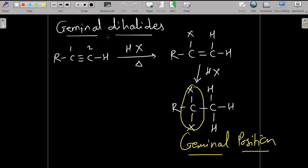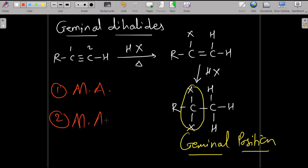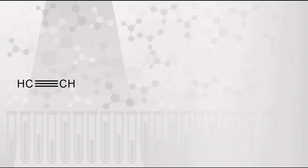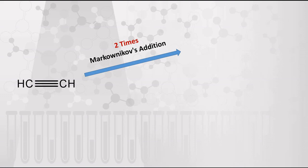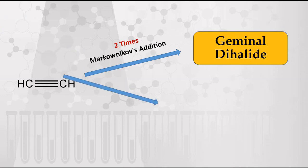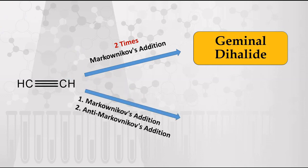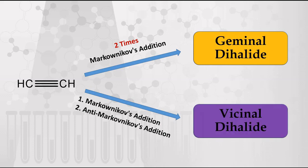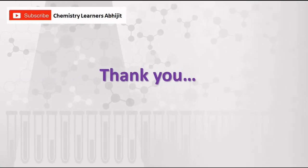The first reaction gave us geminal dihalide. To summarize: in the first step, the alkyne reacts via Markovnikov's addition, and in the second step via anti-Markovnikov's addition to give vicinal dihalide. This is the halogenation of alkynes to get different halogen compounds. With this we conclude here. For such important and interesting videos, please subscribe to my channel Chemistry Learners and don't forget to press the bell icon button. Thank you.